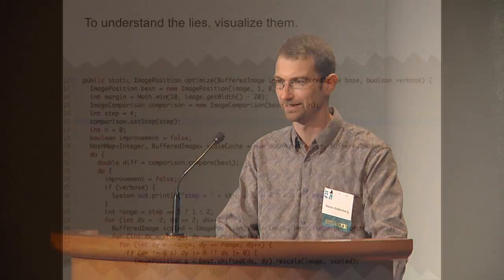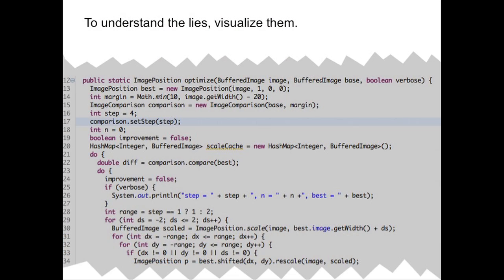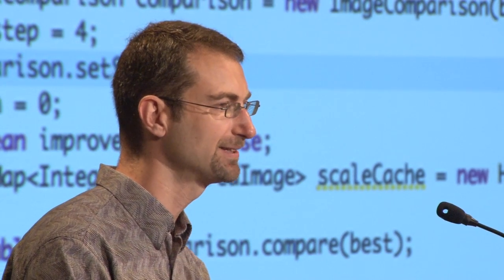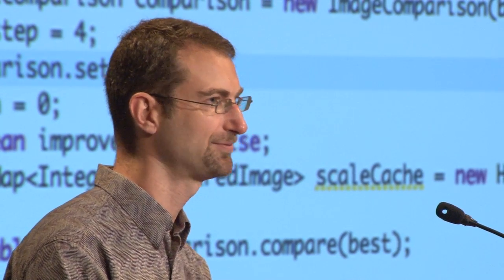Fernanda and I decided we would try to visualize these — that's the way we try to understand things. So we wrote a whole bunch of code that would go out, look at images found on the web of a given painting and align them so that we could compare exactly how they differ. How are these lies all different from each other?